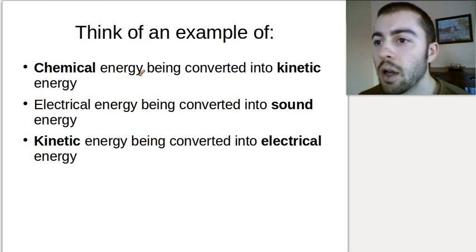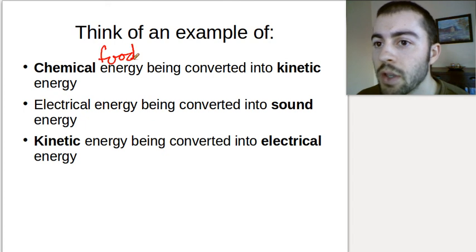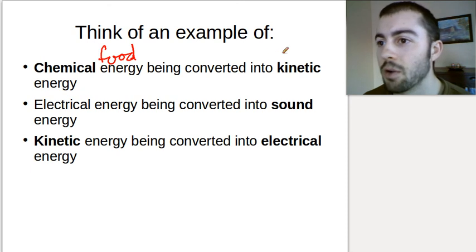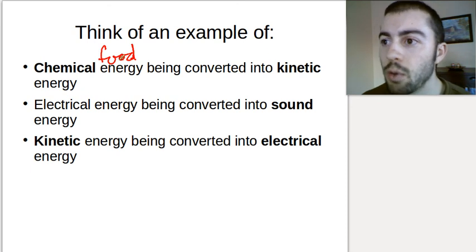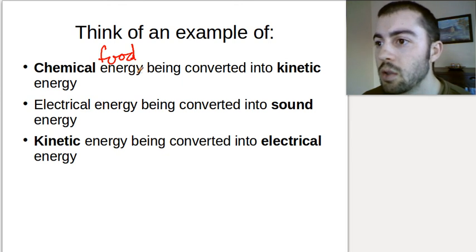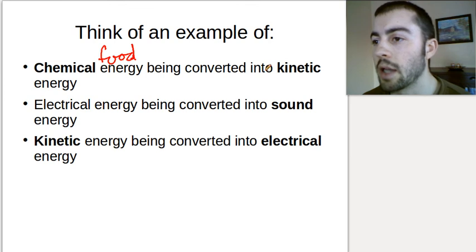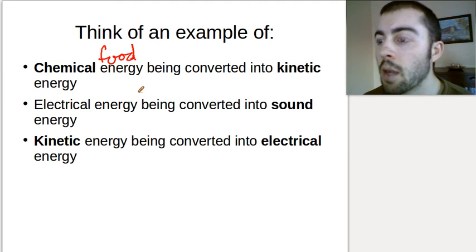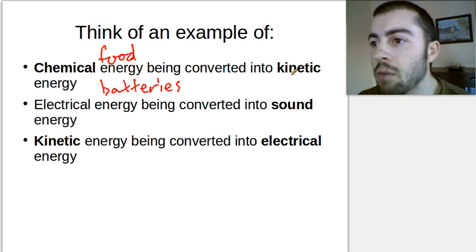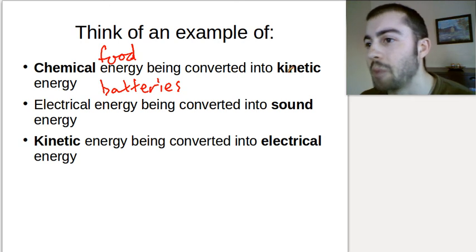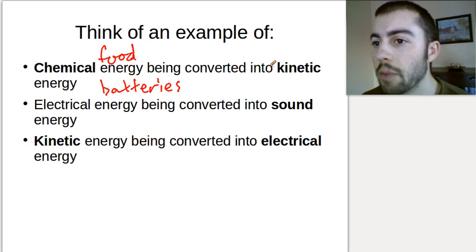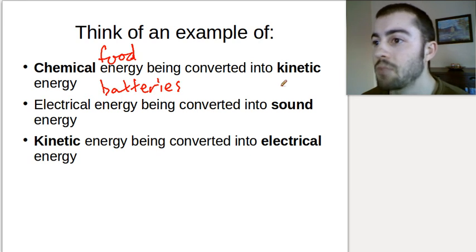Chemical energy being converted into kinetic energy — a couple of examples. We talked about food as chemical energy. If we take in food and then go for a run, we're using kinetic energy for moving, so the chemical energy from the food is being converted into kinetic energy of motion. Also, batteries are chemical energy, so anything that moves and is battery-powered — like a remote control car — converts chemical energy from the batteries into kinetic energy.